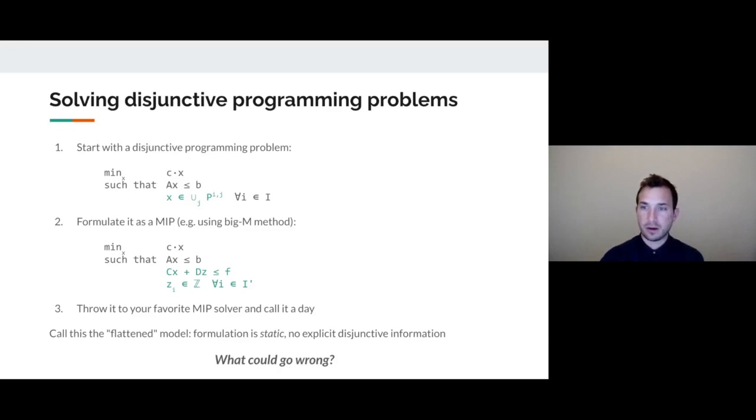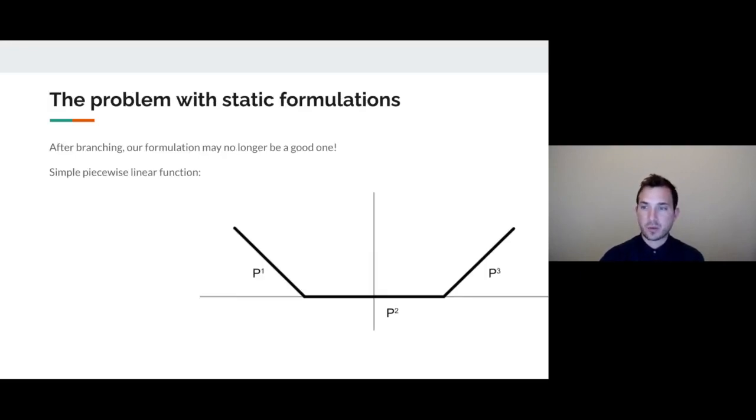So what could go wrong here? I want to show you an example with a simple three-piece piecewise linear function. At the root node, I might build a strong formulation that captures the convex hull of the feasible region.